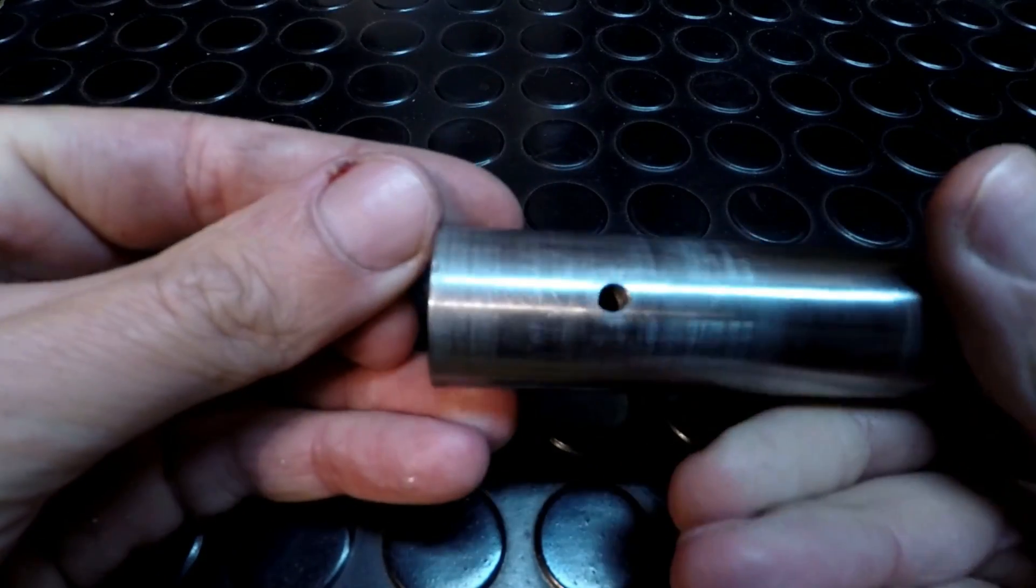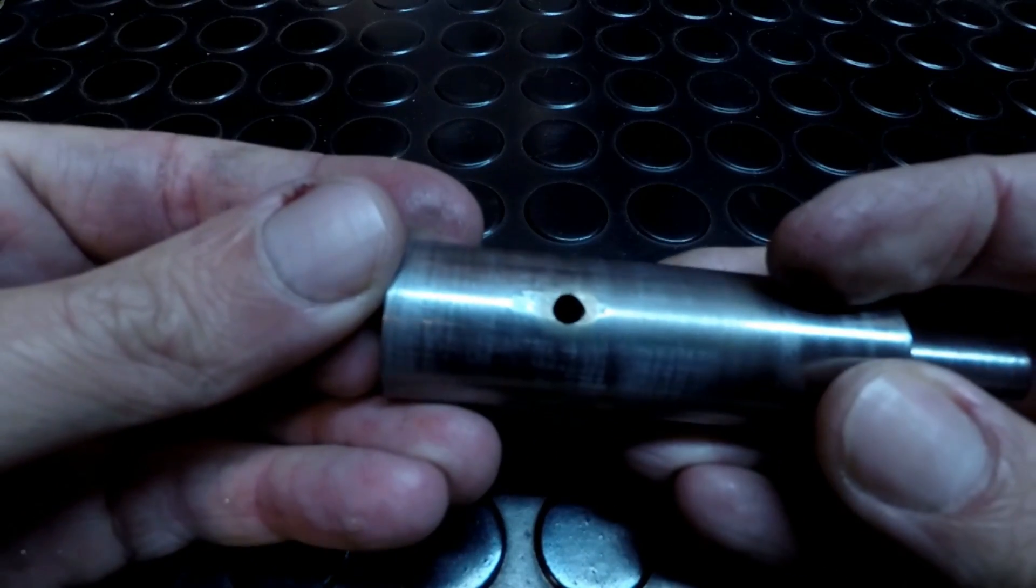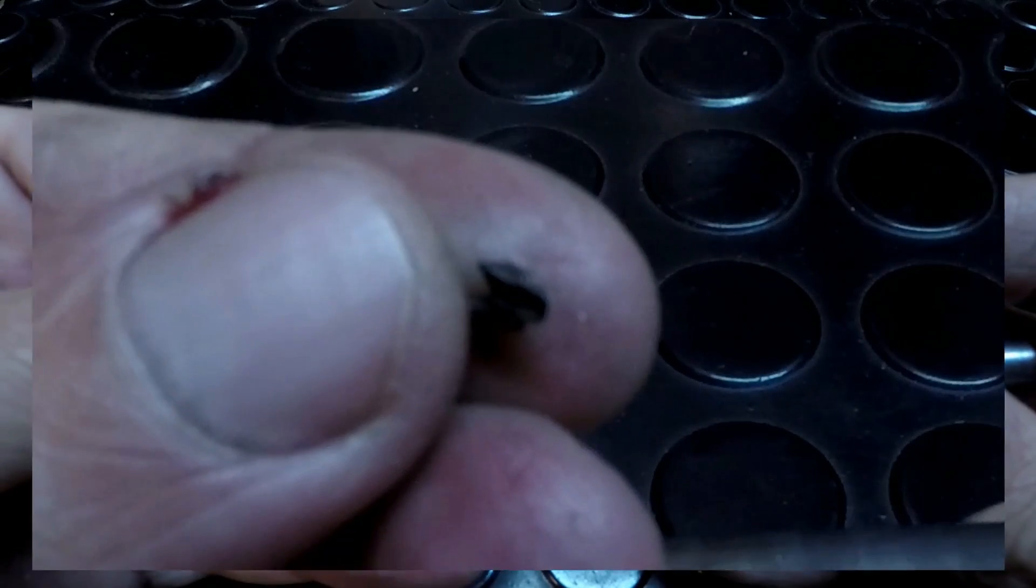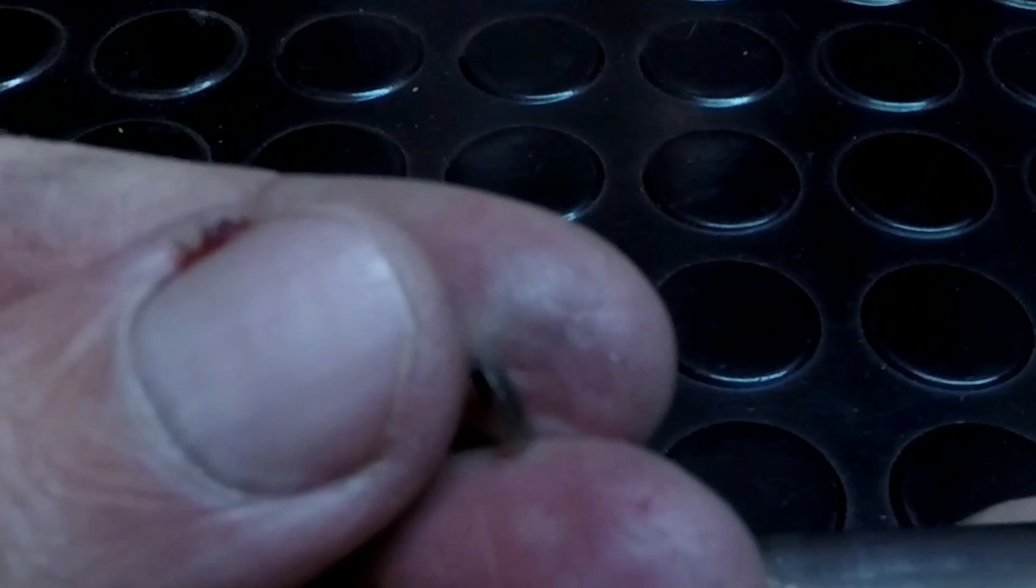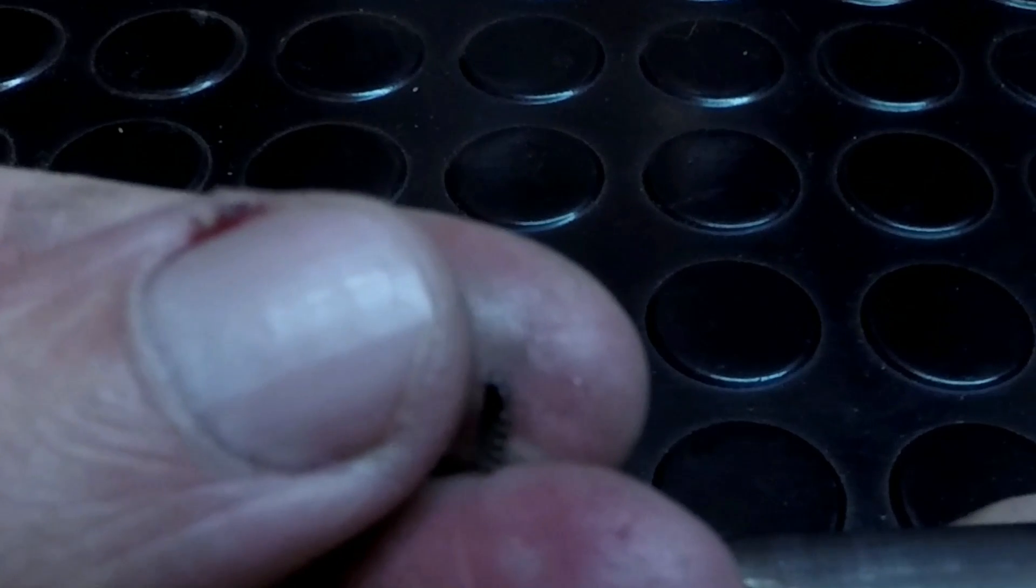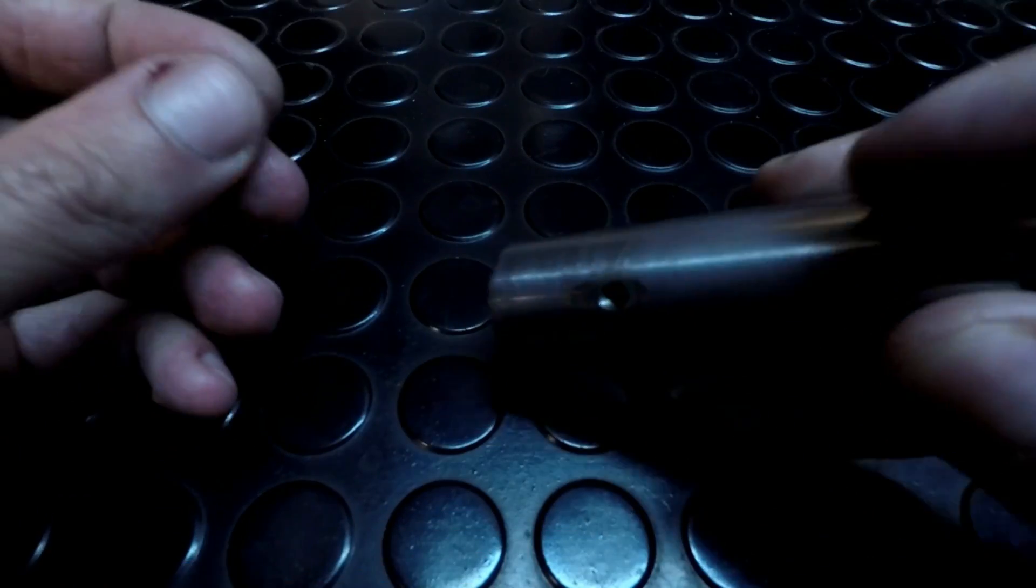You can see a nice clean hole and the other pieces of the tap. That is how to remove a tap with a sinker EDM spark eroder. Thanks for watching.